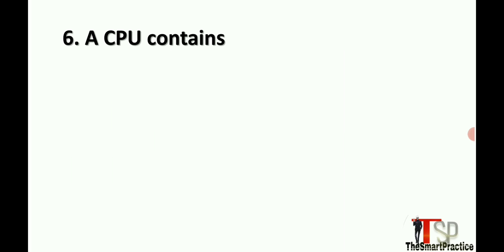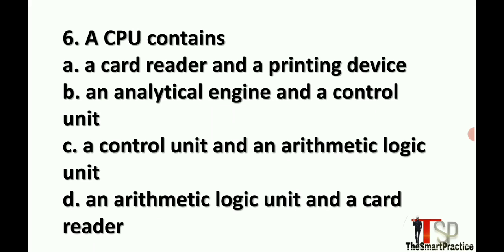A CPU contains: a card reader and a printing device; an analytical engine and a control unit; a control unit and an arithmetic logic unit; or an arithmetic logic unit and a card reader. Answer is a control unit and an arithmetic logic unit — Option C.